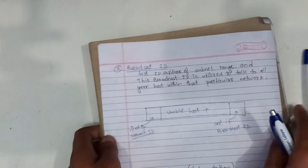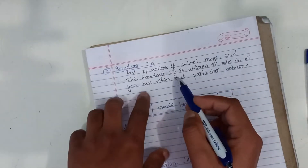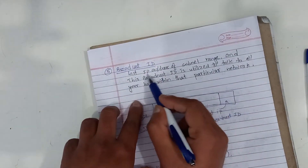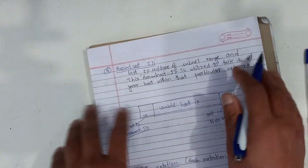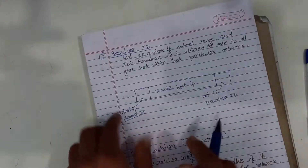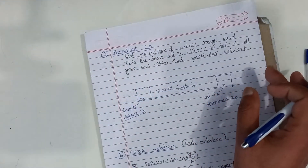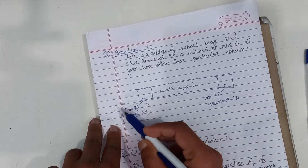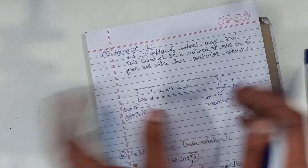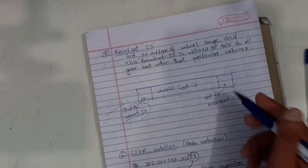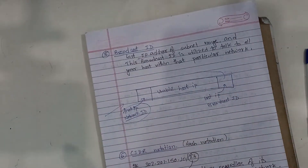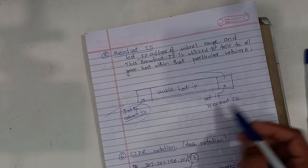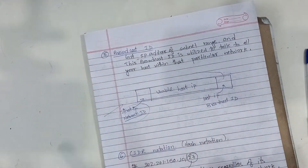The next topic is broadcast ID. The broadcast ID is the last IP address of the subnet range, and it is used to communicate with all hosts within that particular network. The first and last IP addresses of a subnet range are reserved — the first for the network ID and the last for the broadcast ID.